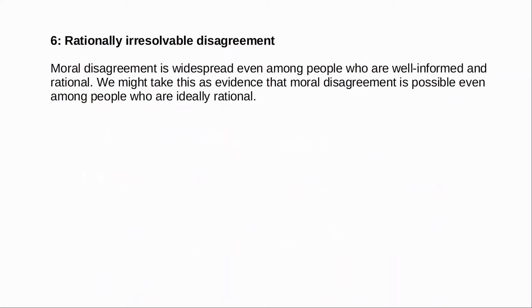A sixth argument involves the idea of rationally irresolvable disagreement. Moral disagreement is widespread, even among people who are very well-informed and rational — it's widespread among the relevant experts. The thought is that the anti-realist can grant that moral disagreement in itself is not a problem, because there are plenty of people who are ignorant or not particularly good at reasoning. What makes moral disagreement a challenge is that it's persistent among the smart and the well-informed. We might take this as evidence that moral disagreement is possible even among people who are ideally rational — people who make no mistakes in their reasoning, who can be convicted of no epistemic errors, may nevertheless arrive at different moral beliefs. So this argument concerns merely possible disagreement, not actual disagreement.